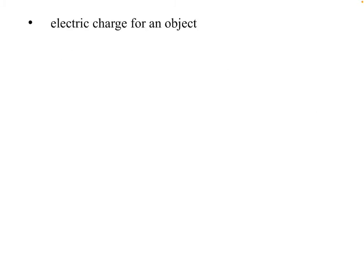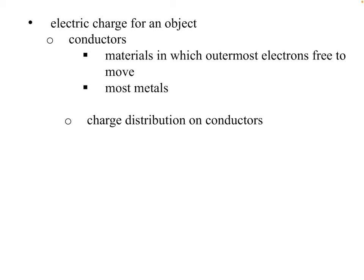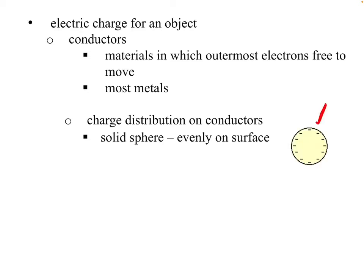If an object has an electric charge, conductors are the ones that give and take electrons best. That's because conductors are materials in which the outermost electrons are free to move, unlike in an insulator where they're not free. Most metals are conductors. A conductor distributes charge very evenly because the free electrons, if something has a negative charge, will try to spread that negative charge out as much as possible since all the negatives are repelling each other.